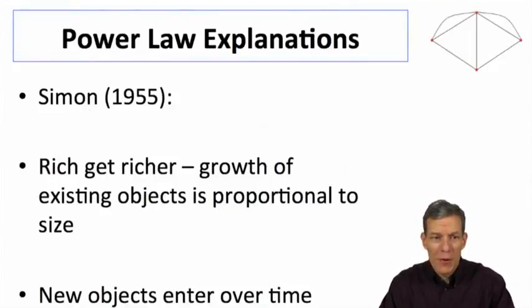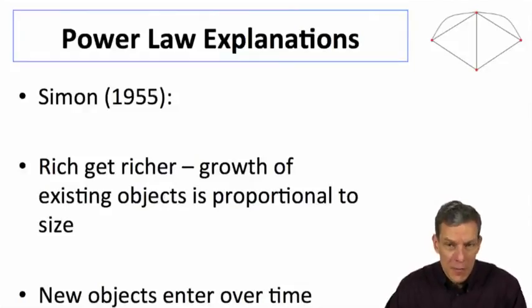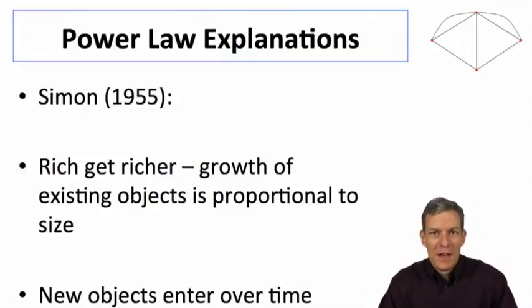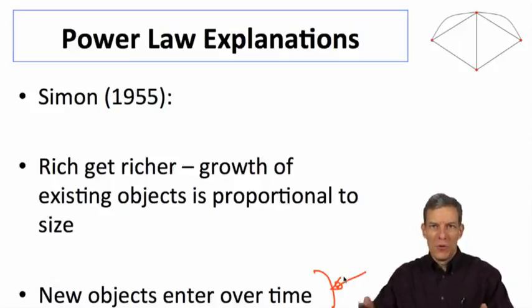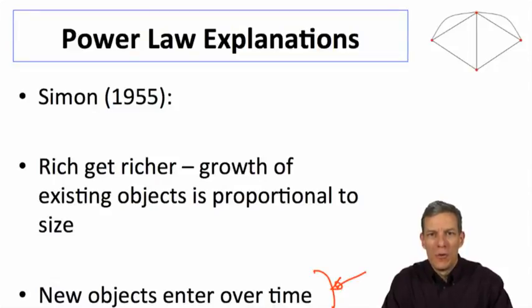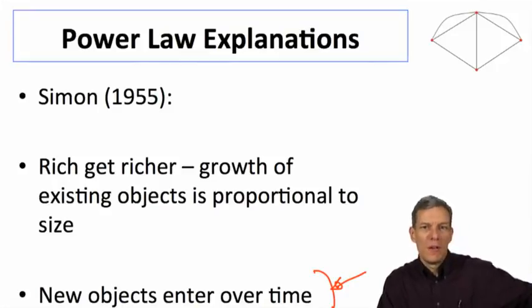These kinds of power law explanations work by Simon in the 1950s gave an explanation for how this might occur. There's sort of two different properties which are important in these kinds of systems. One is that new objects are coming in over time, so we've got our new nodes coming in over time. The other is a sort of rich get richer. So the more links you have, the easier it is to get links.